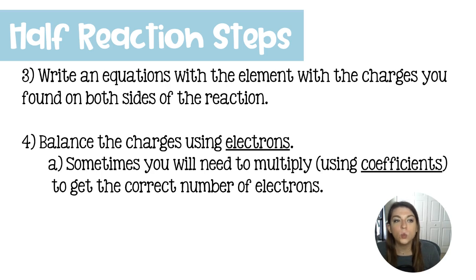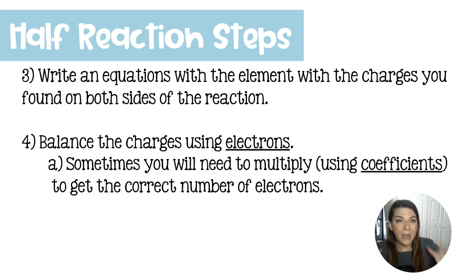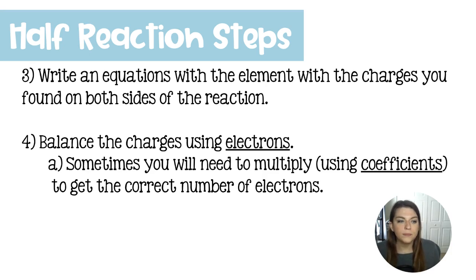We're going to write the equation for one of the elements with all of the charges determined from the reaction, and then balance using electrons. Sometimes you'll need to multiply using coefficients to get the correct number of electrons. If you're working with a balanced equation from the beginning, you probably don't need to manipulate the coefficients — but if your base equation is not balanced, this is something you'll have to do. So step 4a may or may not happen; don't feel like you're doing something wrong if you don't have to do this.